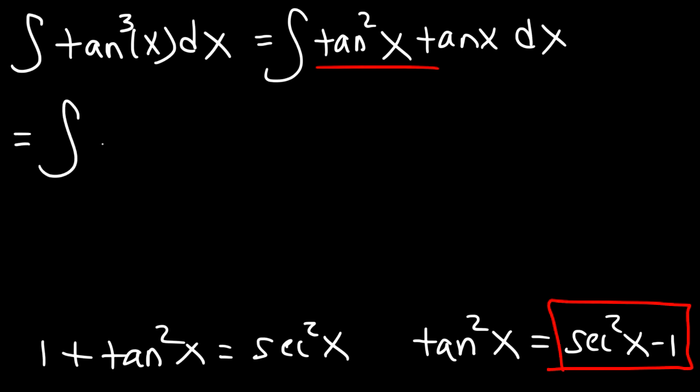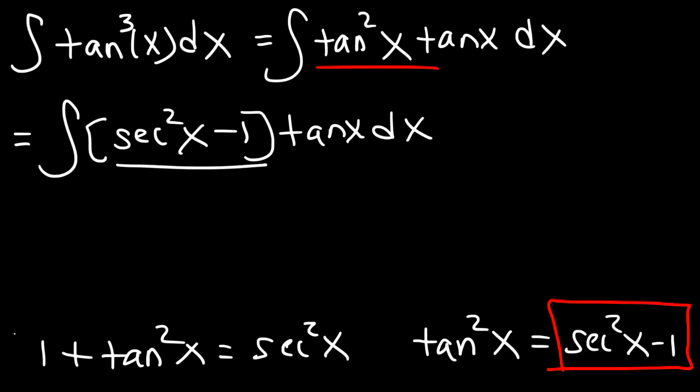And so now we have the integral of secant squared minus 1 times tangent x. And I'm going to distribute tangent to both terms inside the brackets. So it's going to be secant squared times tangent x and then minus tangent x dx.